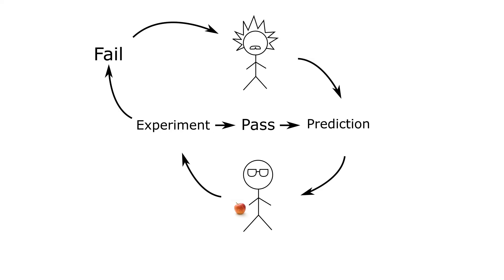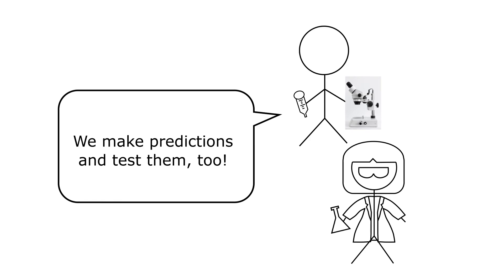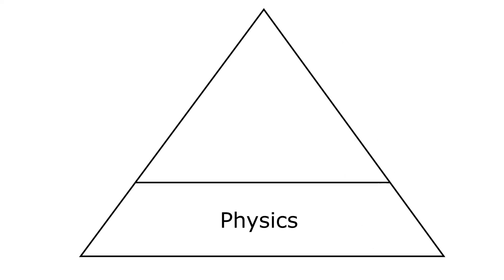How does this differ from chemists and biologists, though? Chemists and biologists make predictions and then run experiments to test their predictions, so what is the distinction between the fields? Well, the answer is that physics is much broader and more fundamental than these other fields.